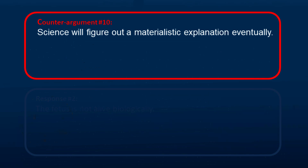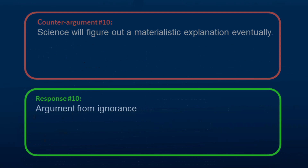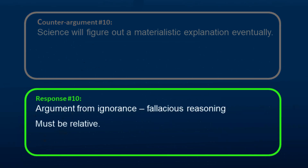Another counter-argument is that natural science will figure out a materialistic explanation eventually in the future. This is an argument from ignorance, which is fallacious reasoning. If someone is going to claim that the God hypothesis has a lower epistemic probability right now, then it must be relative to something else. You need something to compare it with, or else the God hypothesis has to be selected as it is the only one available at this point in time.